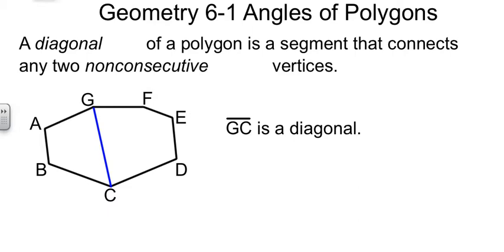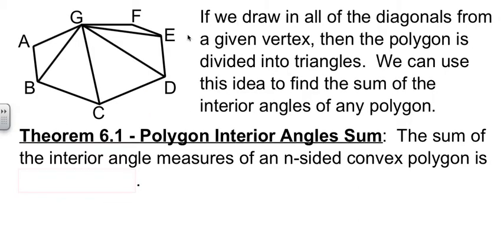Now if we take our same polygon here and I draw in all the diagonals from a given vertex, so I drew in all of them from point G, then our polygon, our 1, 2, 3, 4, 5, 6, 7-sided heptagon, gets split up into 1, 2, 3, 4, 5 triangles.